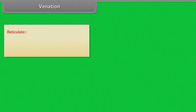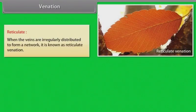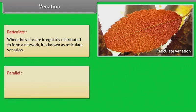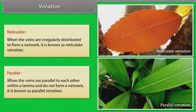Reticulate: When the veins are irregularly distributed to form a network, it is known as reticulate venation. Parallel: When the veins are parallel to each other within a lamina and do not form a network, it is known as parallel venation.